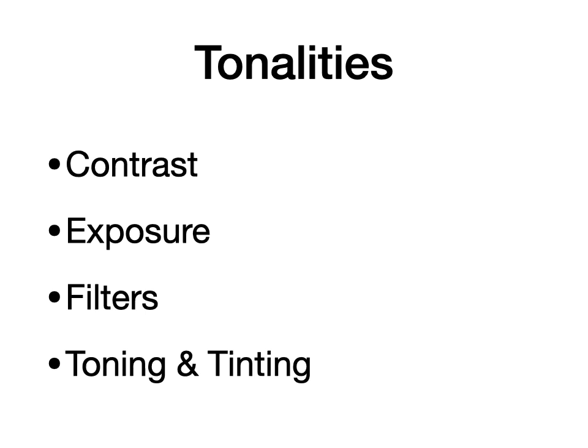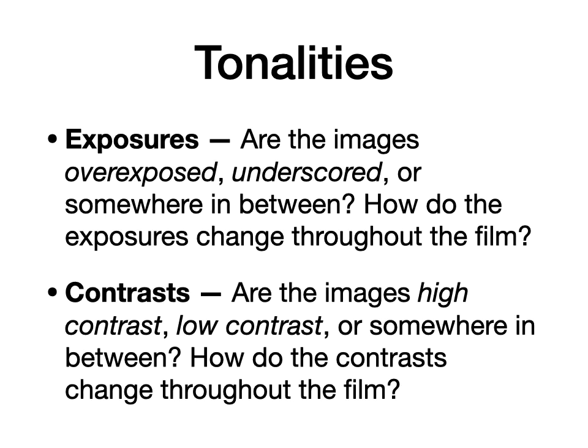Tonalities are the first really big, important category of cinematography — a broad grouping for things cinematographers can do to affect the quality of the image. You'll find each of these terms broken down in far more depth in Bordwell and Thompson. What I want to do is give you a sense of what kinds of questions you should be asking yourself as you are watching movies, using these terms and concepts as a guide.